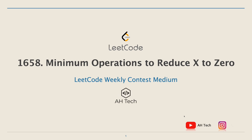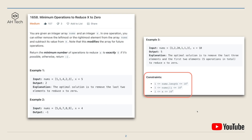Hi everyone, welcome back to the channel. Today let's solve the LeetCode contest question: Minimum Operations to Reduce X to Zero. We are given an integer array nums and an integer x. In every operation we are able to remove the leftmost or rightmost element from the array nums and subtract its value from x. This operation will modify the array as well, and we have to return the minimum number of operations to reduce x to exactly zero.